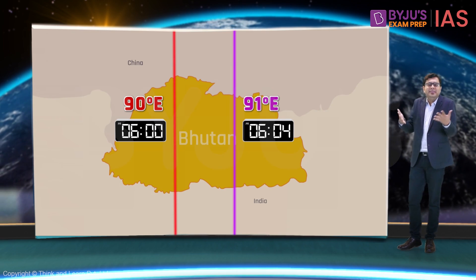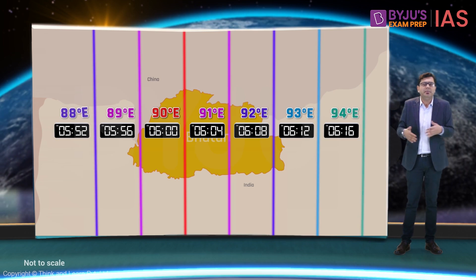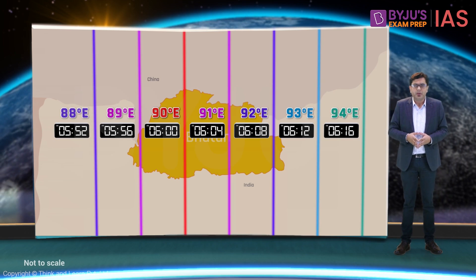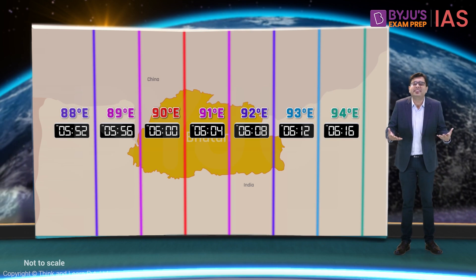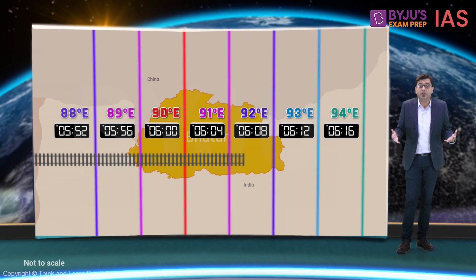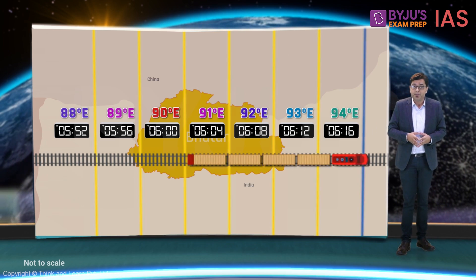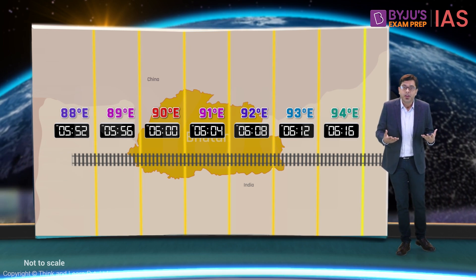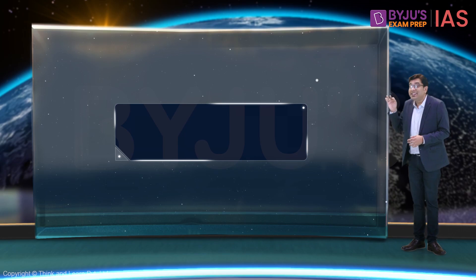If we went by this arrangement, every place would have a different local time if they do not share the same longitude. This would create a lot of problems — for example, it would be difficult to prepare a timetable for trains that cross several longitudes in a stretch. So what's the solution? The solution comes in the form of standard time.